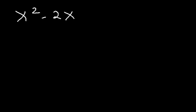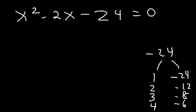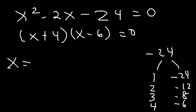Now try this one: solve x squared minus 2x minus 24. What two numbers multiply to negative 24 and add to negative 2? If we divide negative 24 by 2, we get negative 12; by 3, negative 8; by 4, negative 6. Since 4 times negative 6 is negative 24 and 4 plus negative 6 is negative 2, we can write it as x plus 4 times x minus 6. So x is equal to negative 4 and positive 6.